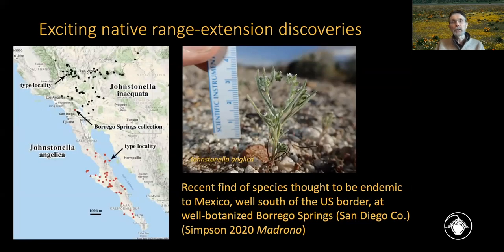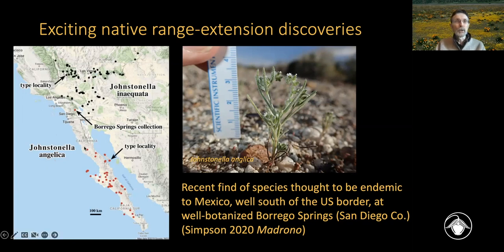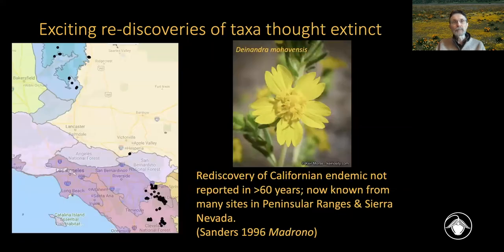Sometimes exciting range extension discoveries are found — things not new to science but only known from outside the state. One example was actually collected for the first time in California on a Jepson workshop held in Anza-Borrego, where Mike Simpson teaching the workshop had a participant ask 'which one is this?' — it turned out to be Johnstoniella anglica, known from well south of the Baja California border, but found up around Borrego Springs. It was recently included in the revision of Boraginales for the Jepson eFlora.